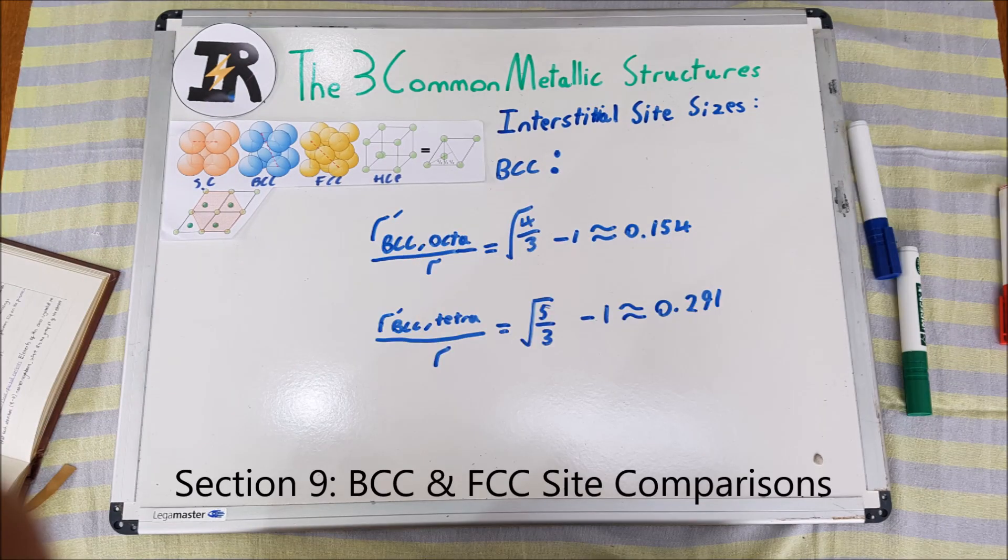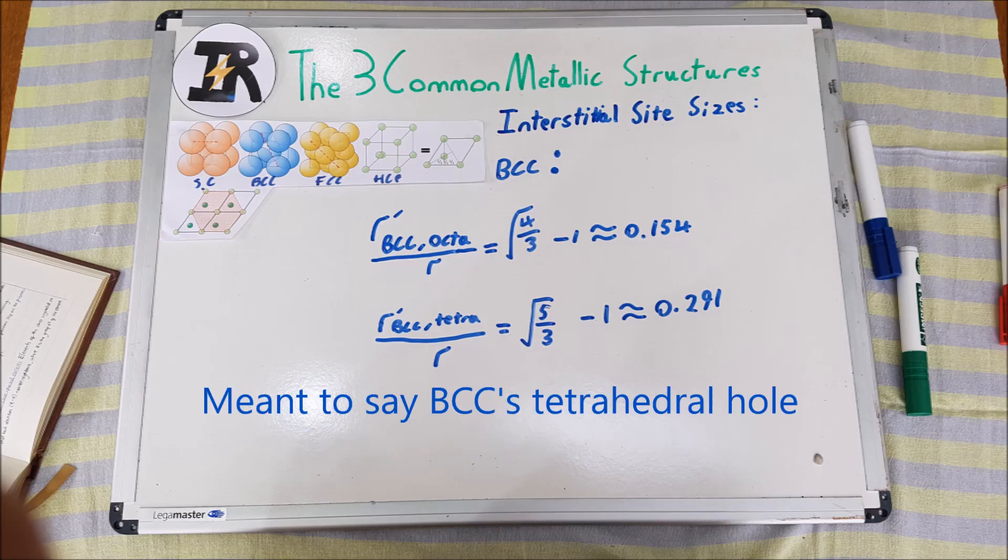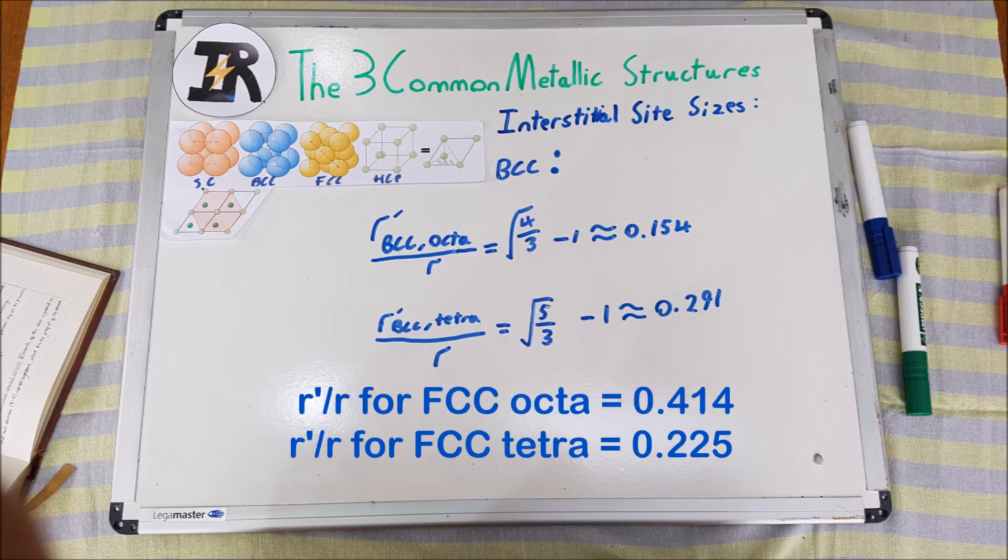In the FCC structure, the octahedral hole was larger than the tetrahedral hole, whereas in the BCC structure, the tetrahedral hole is larger than the octahedral hole. But BCC's octahedral hole has a smaller radius than FCC's octahedral hole.